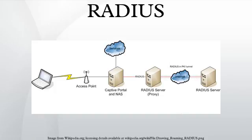Roaming: RADIUS is commonly used to facilitate roaming between ISPs, for example, by companies which provide a single global set of credentials that are usable on many public networks, or by independent but collaborating institutions issuing their own credentials to their own users, that allow a visitor from one to another to be authenticated by their home institution, such as eduroam. RADIUS facilitates this by the use of realms, which identify where the RADIUS server should forward the AAA requests for processing.